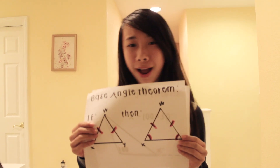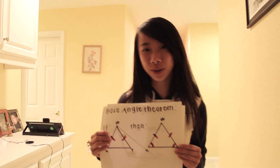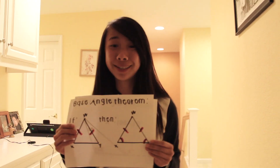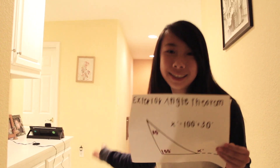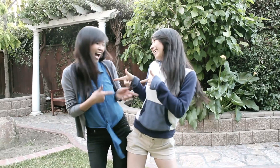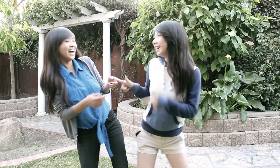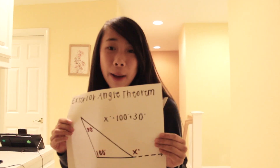Base angle theorem: if two sides of a triangle are congruent, then the angles opposite are congruent. But this is only for isosceles triangles. Exterior angle theorem: the measure of an exterior angle is equal to the sum...